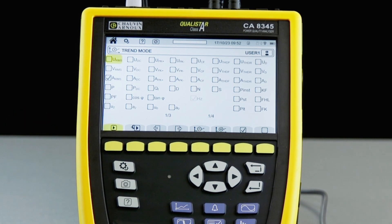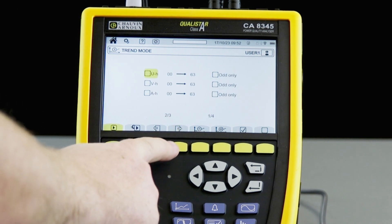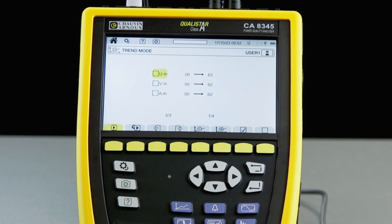In trend mode, we can pick from the various options to define which trends we wish to record. There are three pages. On page one we have the standard trend parameters and on pages two and three we have harmonic parameters.